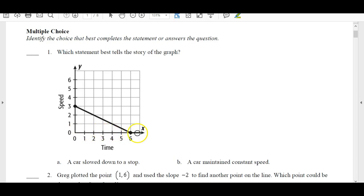And then it continues at zero. So let's read our options here. This one says 'a car slowed down to a stop,' and that one says 'a car maintained constant speed.'